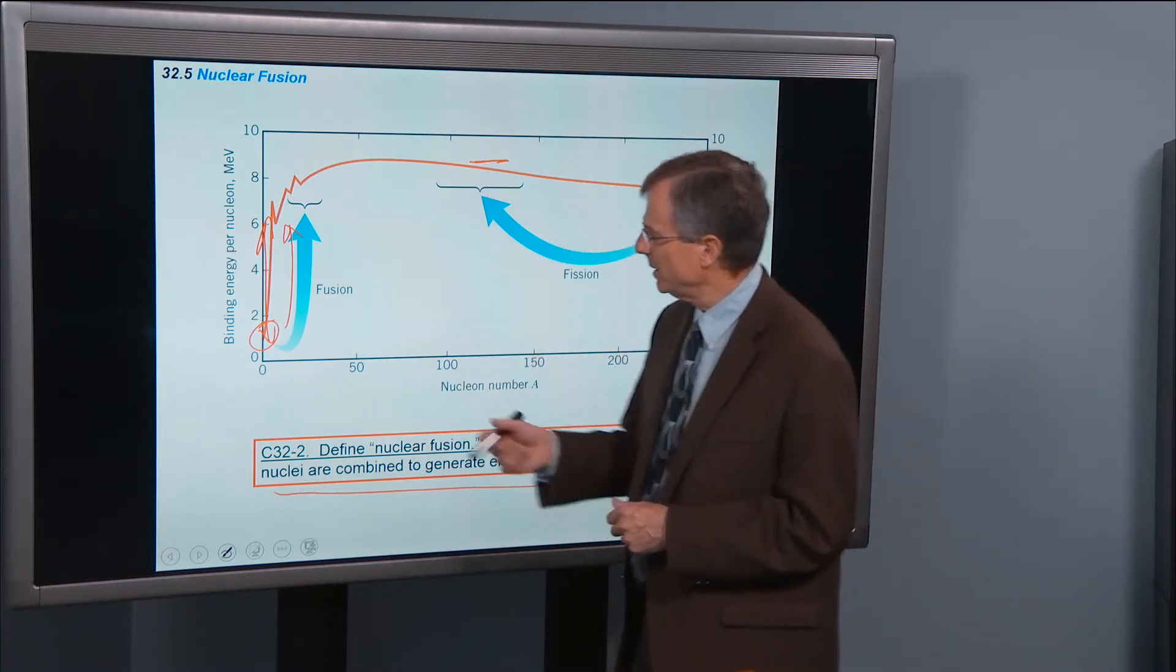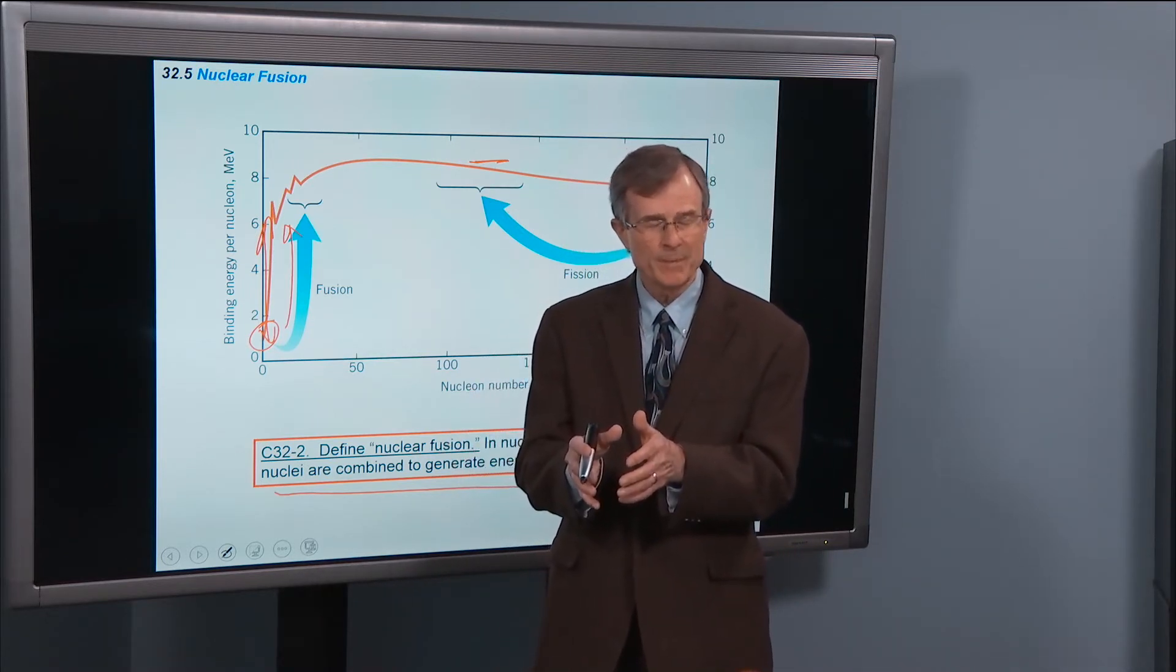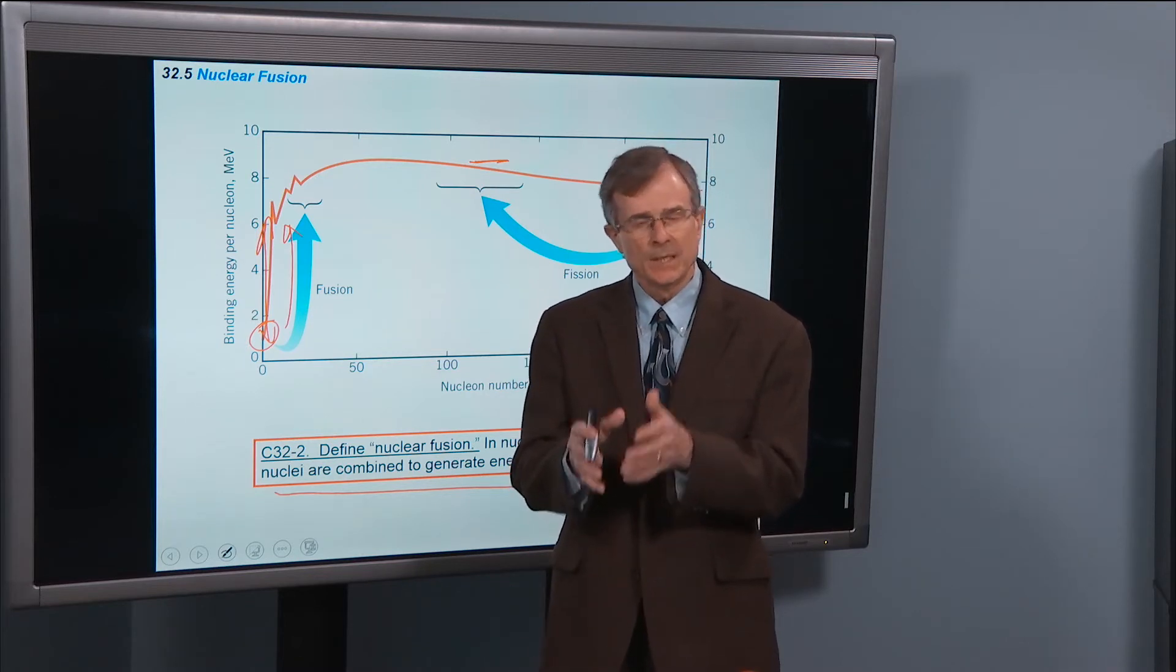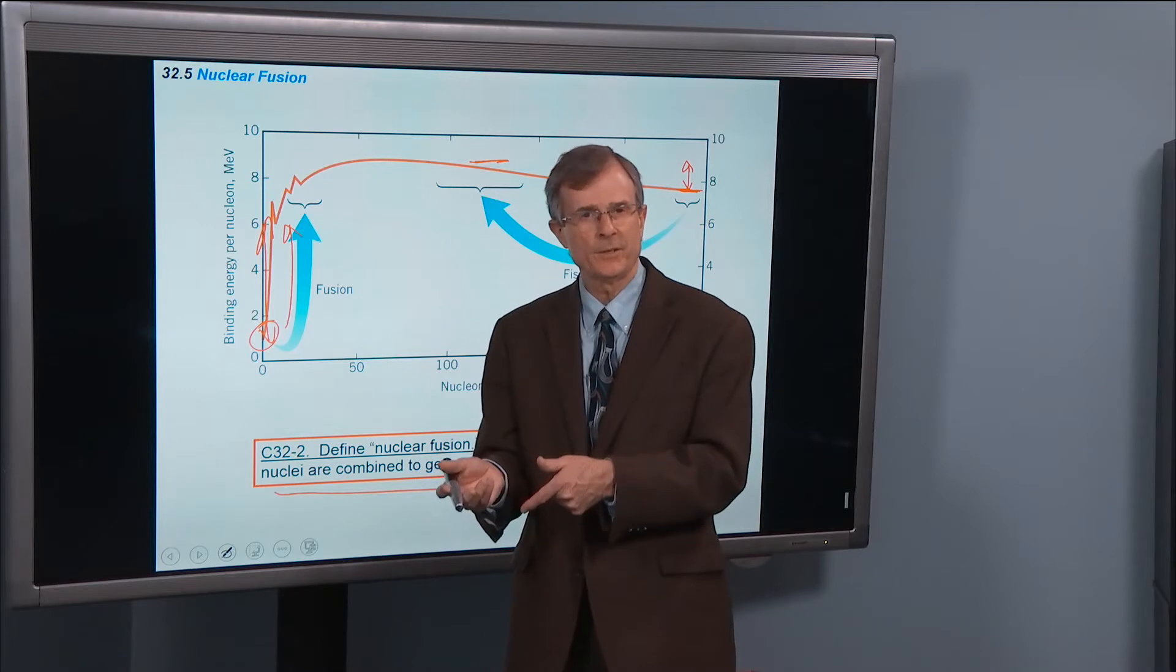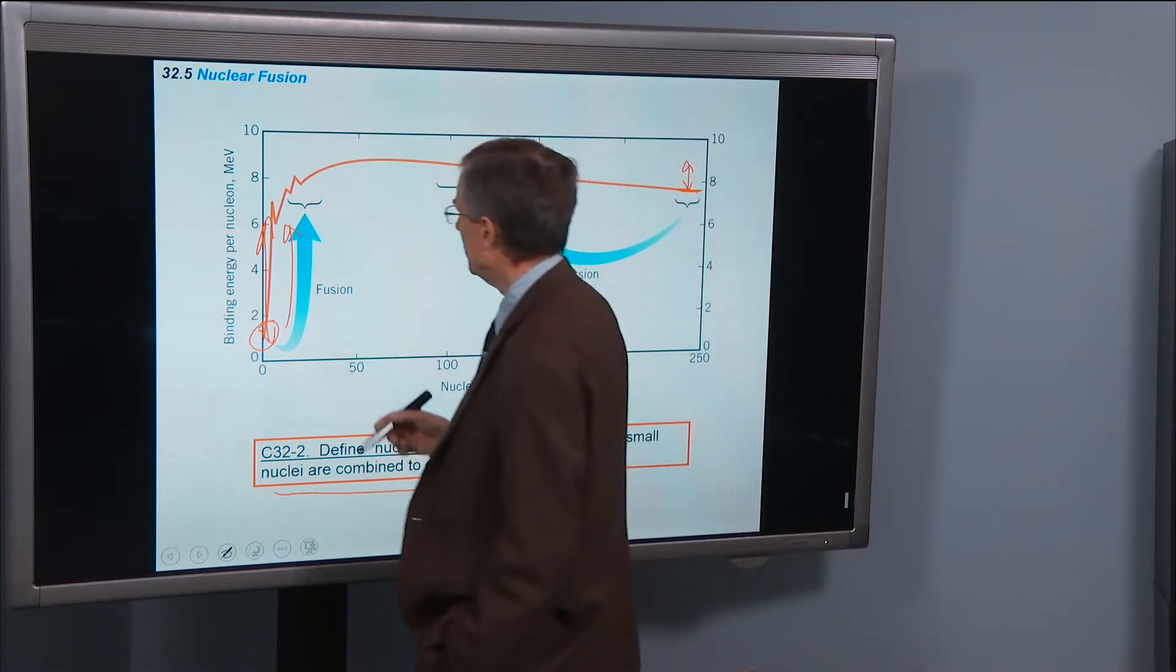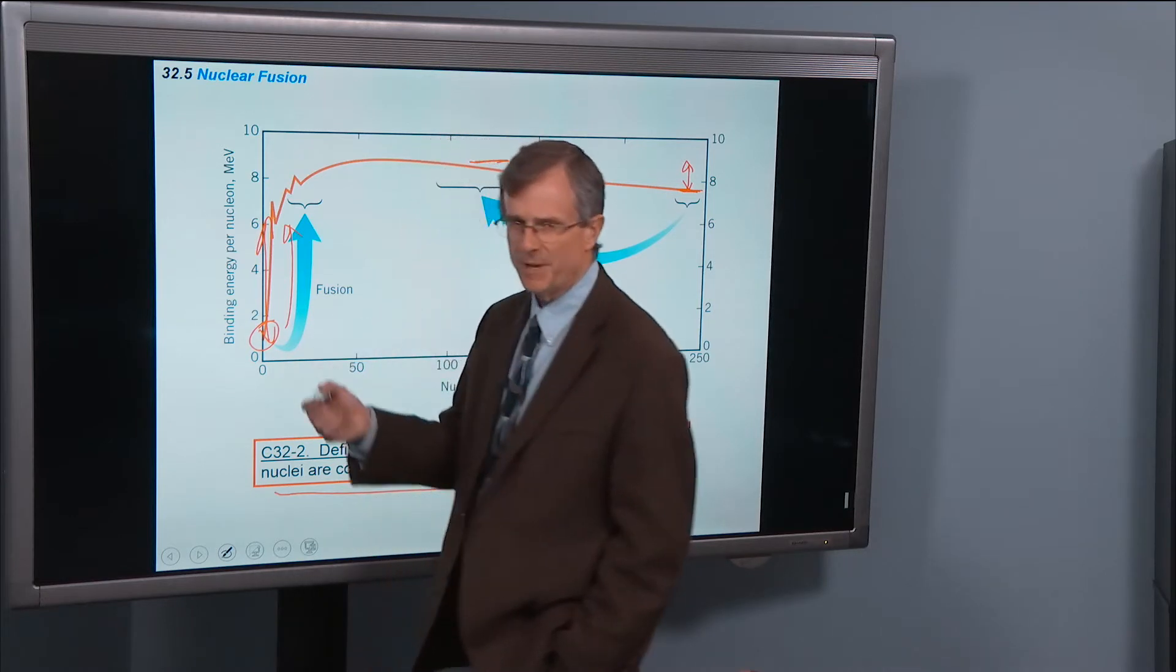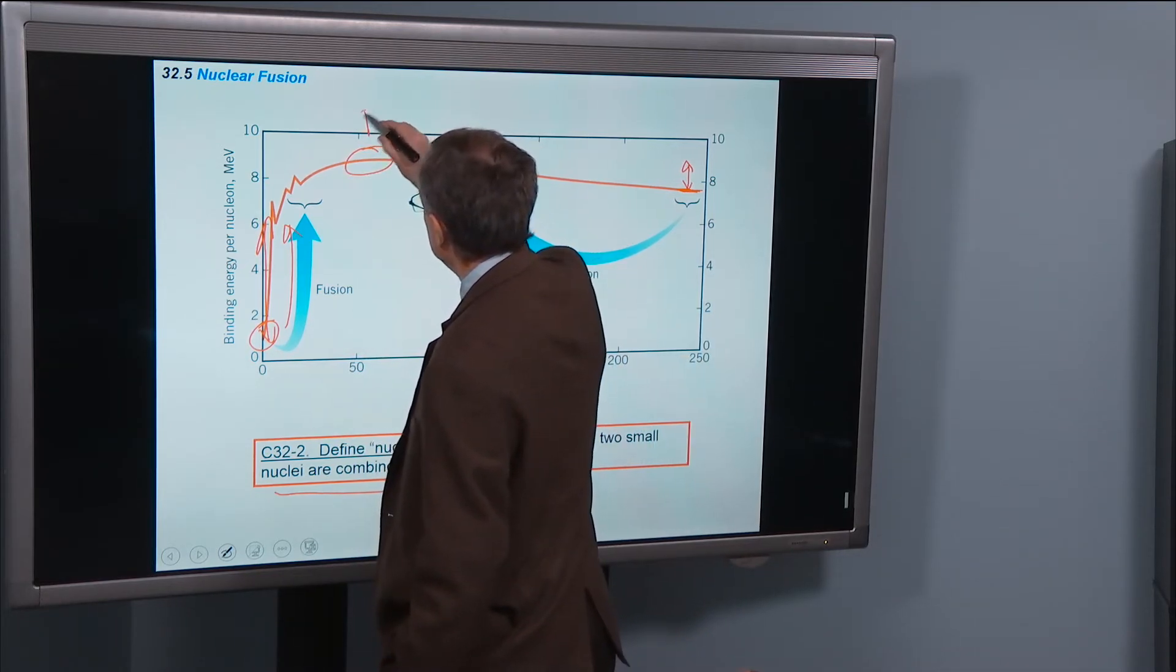Then when our sun runs out of hydrogen, and it has a core that's mostly made out of helium, then it will start fusing helium together to form heavier elements. Then eventually stars get to the point where they can't fuse, depending on the mass of the star. You get up to where the region of where iron is.